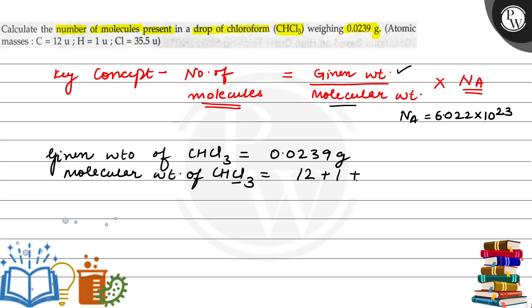Plus one chlorine is 35.5. But here there are 3, so we multiply it by 3. When we add this, the value is equals to 119.5 grams.